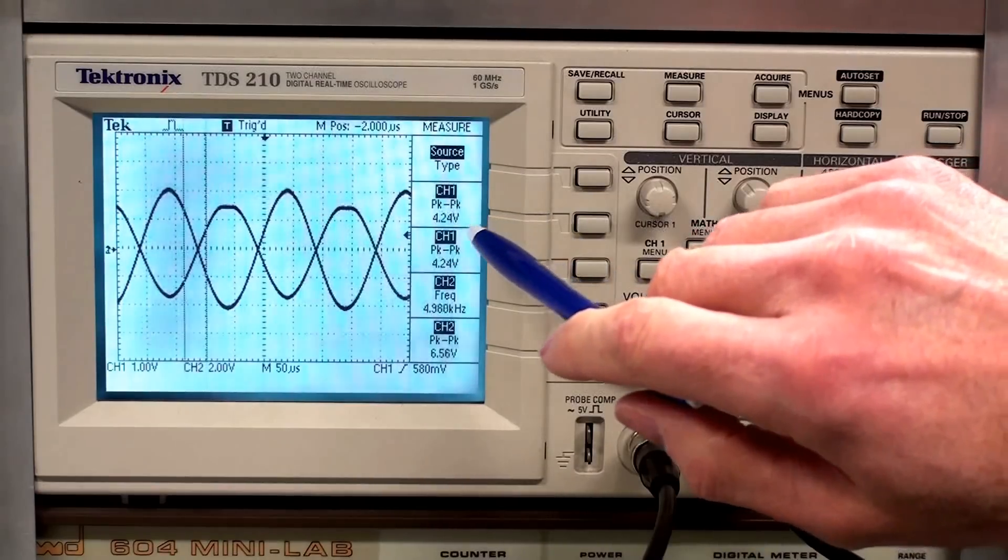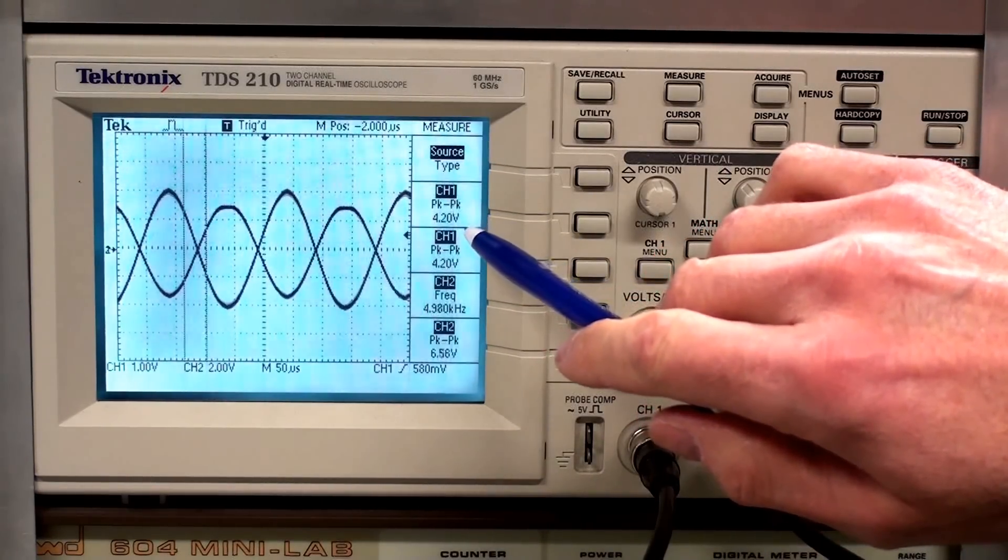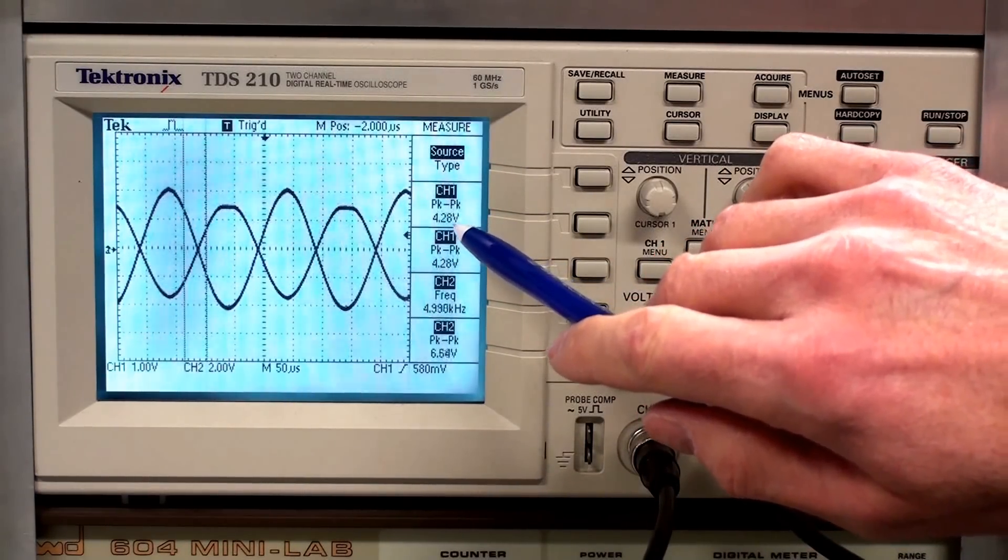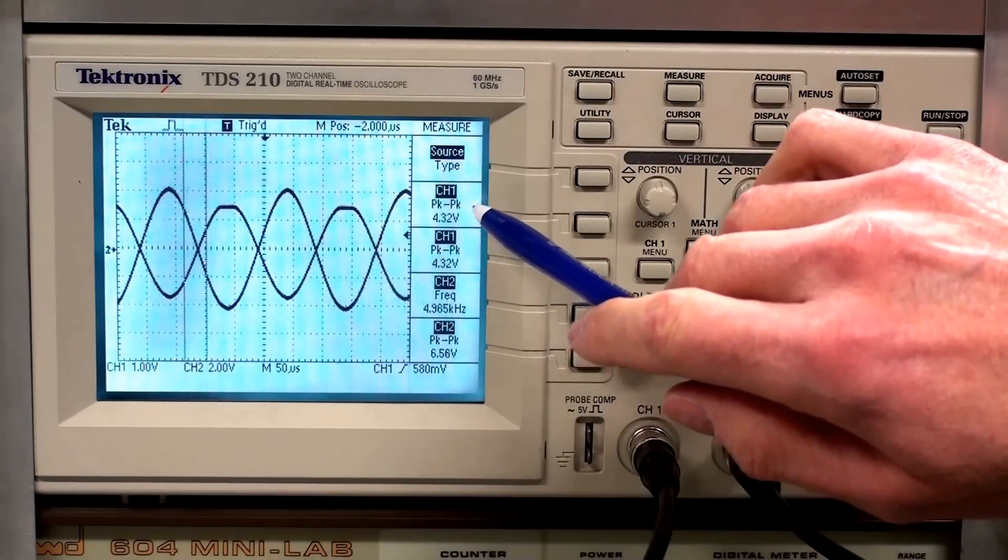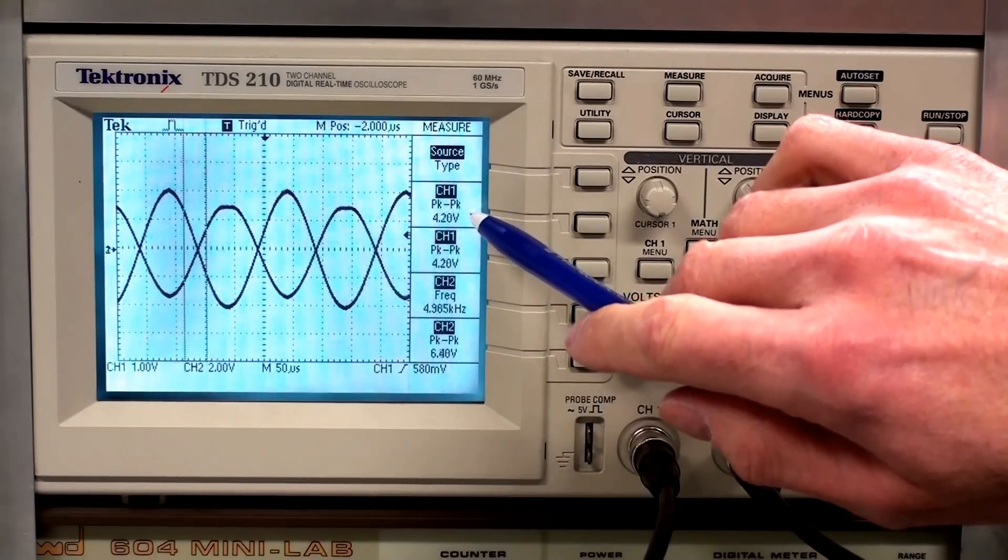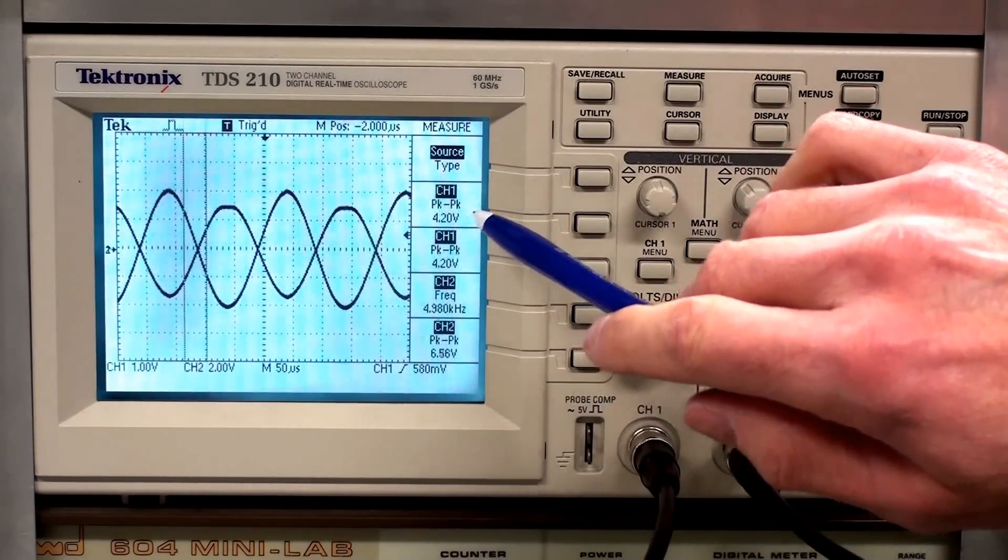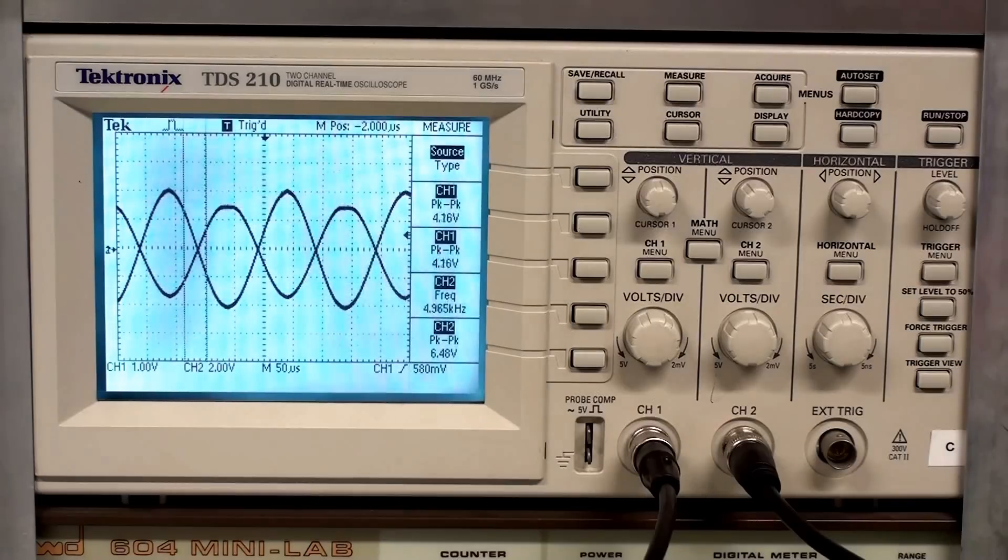We can see that clipping now starts to occur at approximately 4.2 volts peak to peak on the input. Whereas, in the previous one, it was approximately half of that.